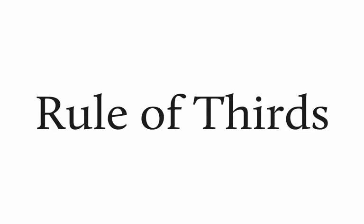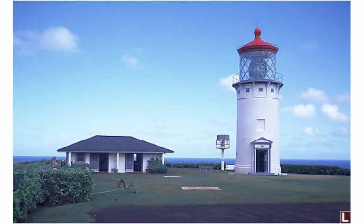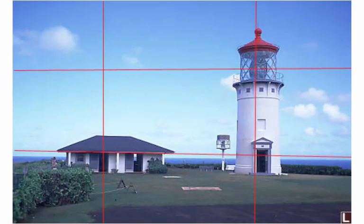The first one is the rule of thirds. You've probably seen this before if you've ever used a crop tool in Photoshop or Pixlr. If I take an image like this — this is a lighthouse — and I apply the rule of thirds over top of it, you'll see that the two points of interest are in the upper right-hand corner and the lower left-hand corner.